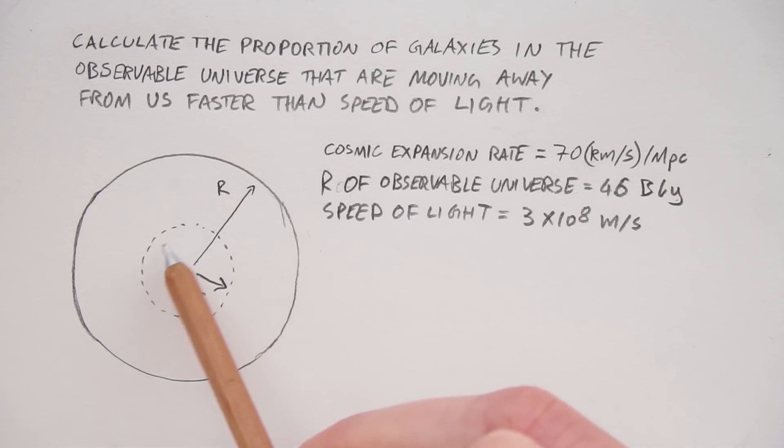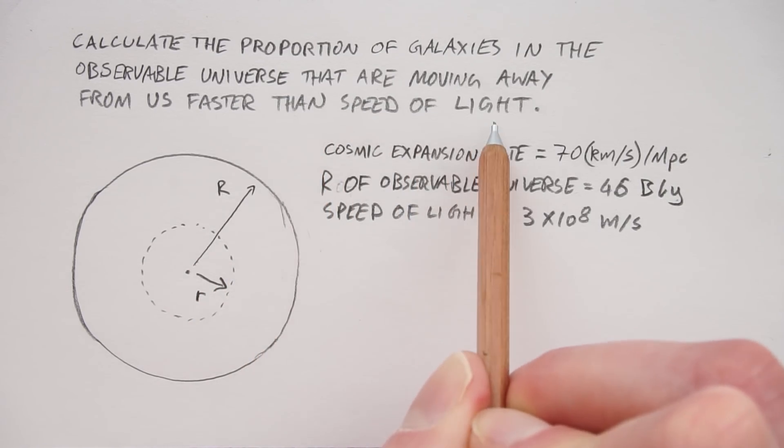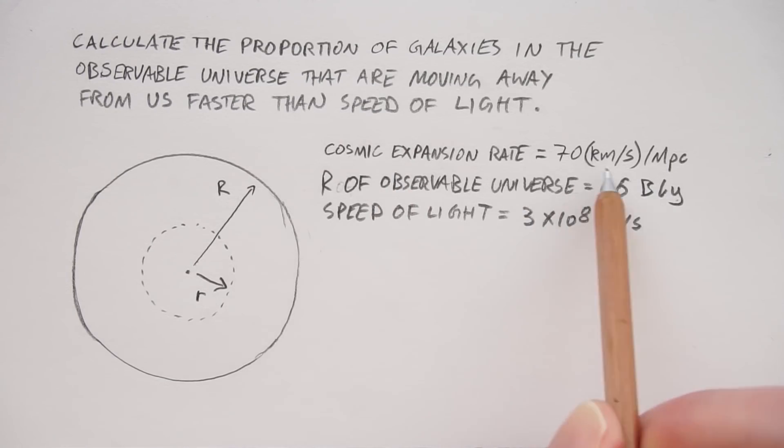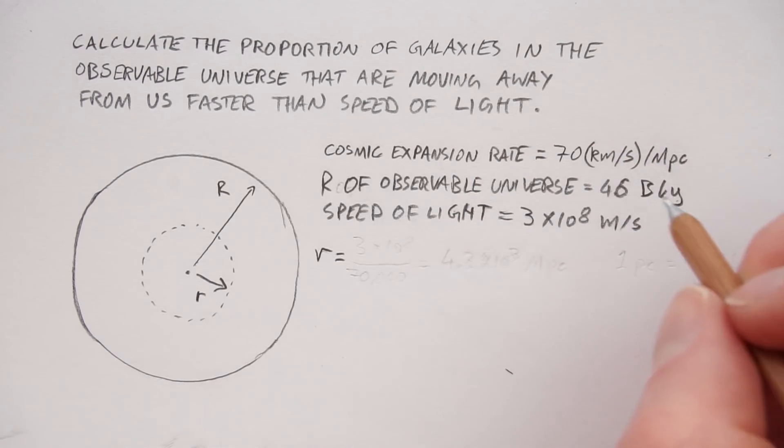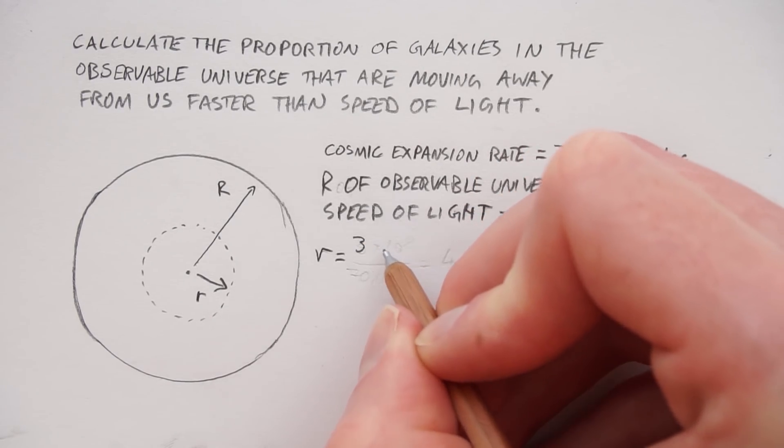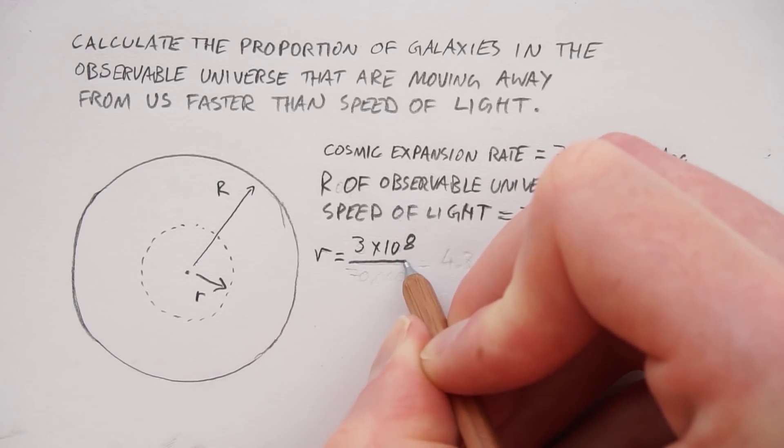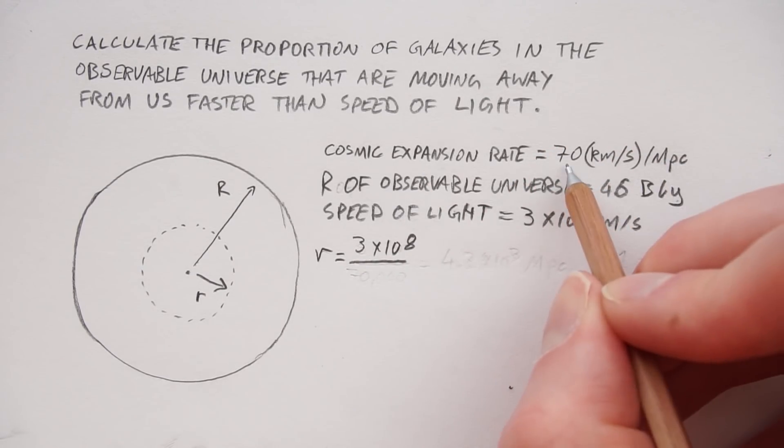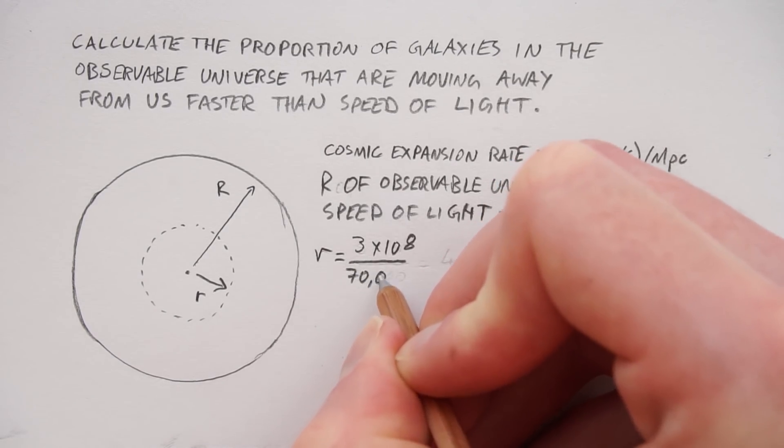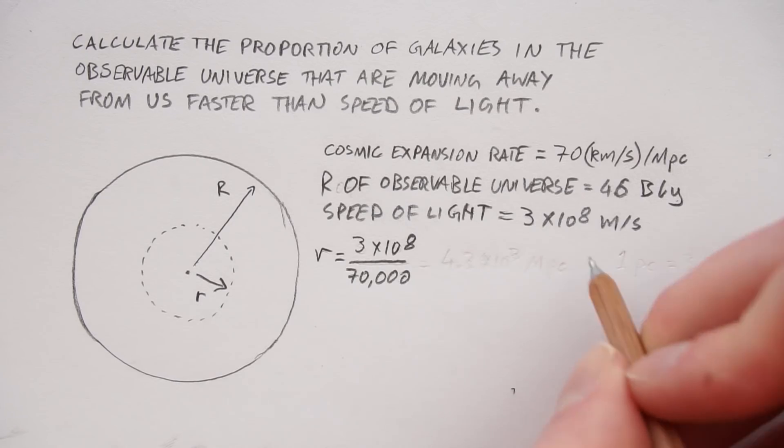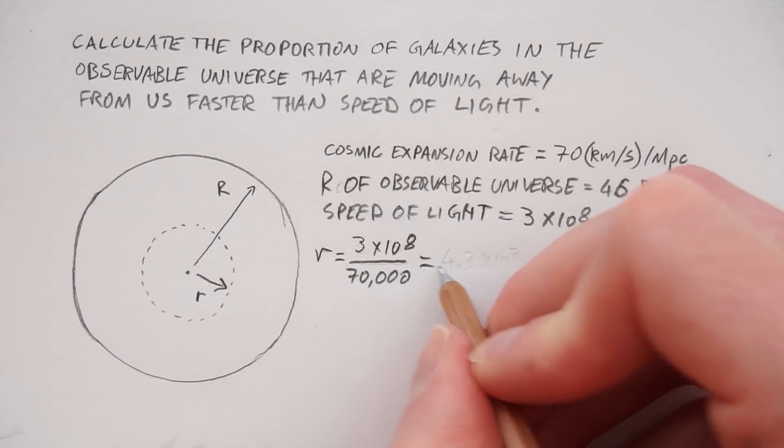Step one is to work out what the radius is where the galaxies are moving away from us faster than light. And that's simply finding how many of these megaparsecs we need to go for the expansion rate to equal the speed of light. So this little r is basically the speed of light divided by the expansion rate, and this is in kilometers per second. This actually needs to be 70,000 meters per second because the speed of light is in meters per second.